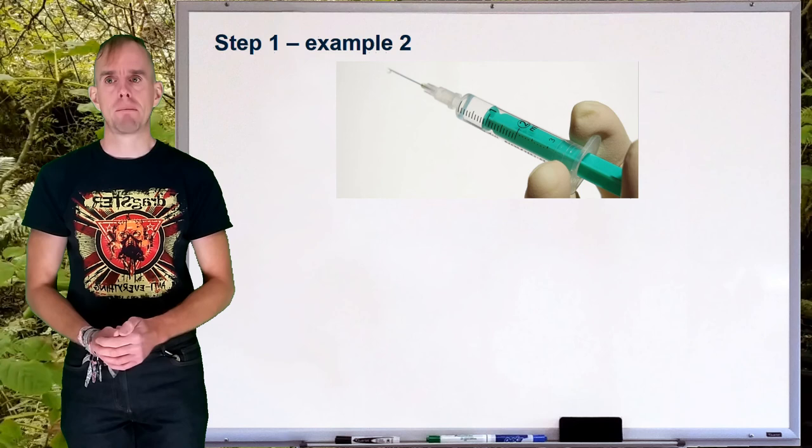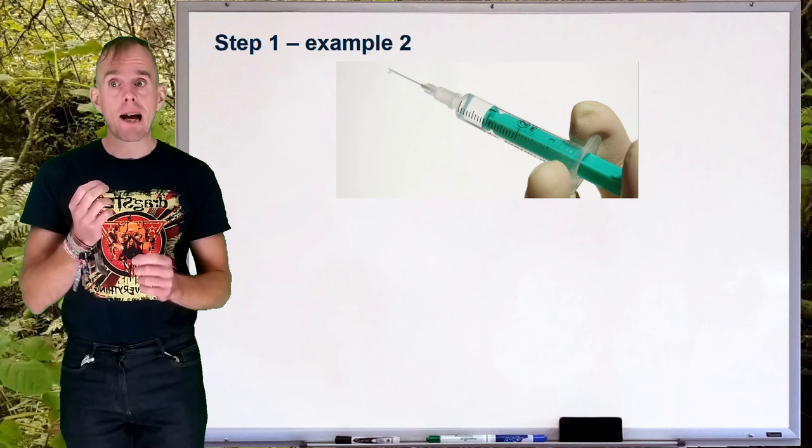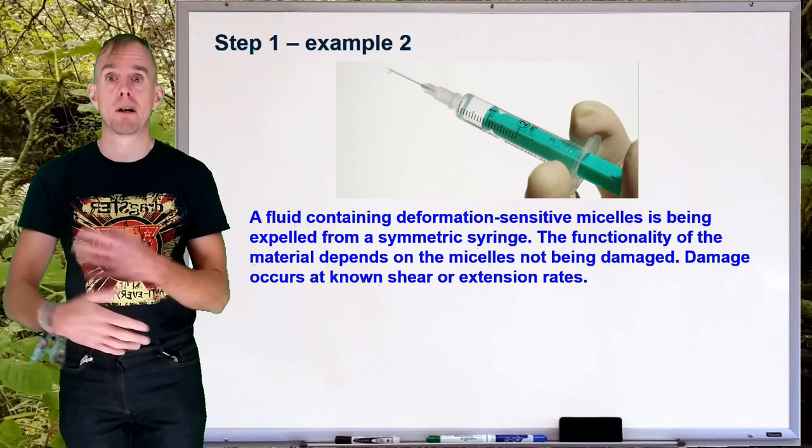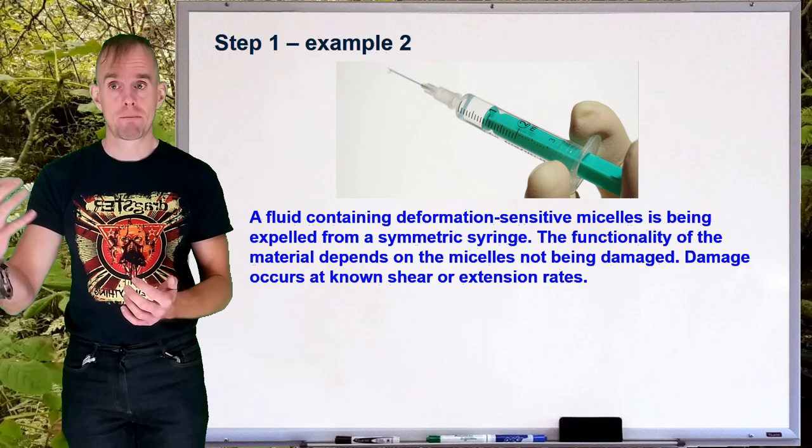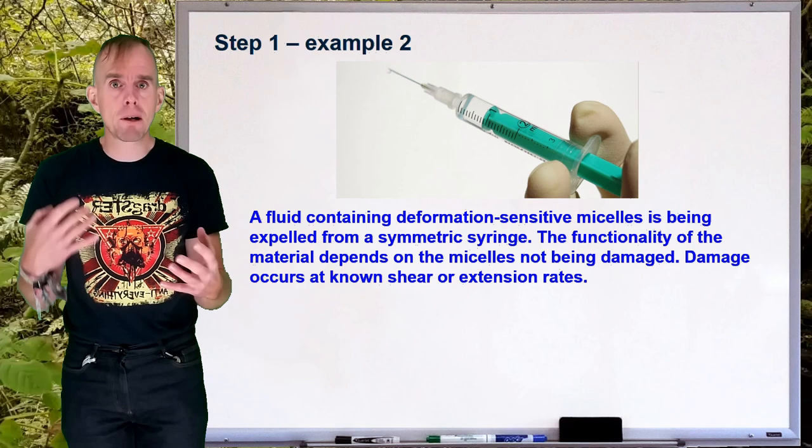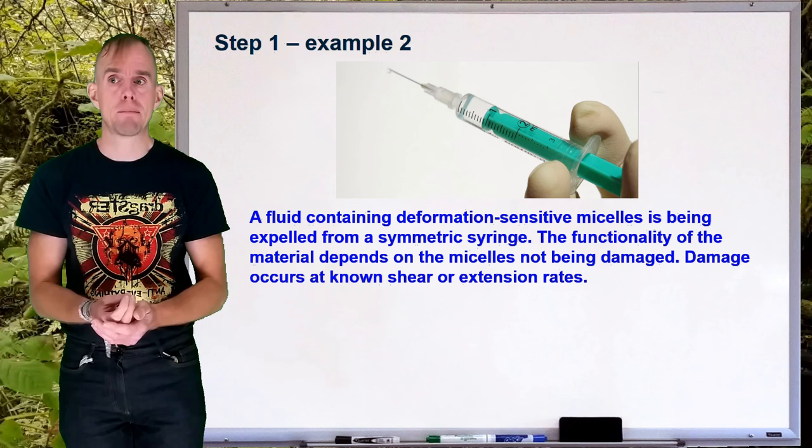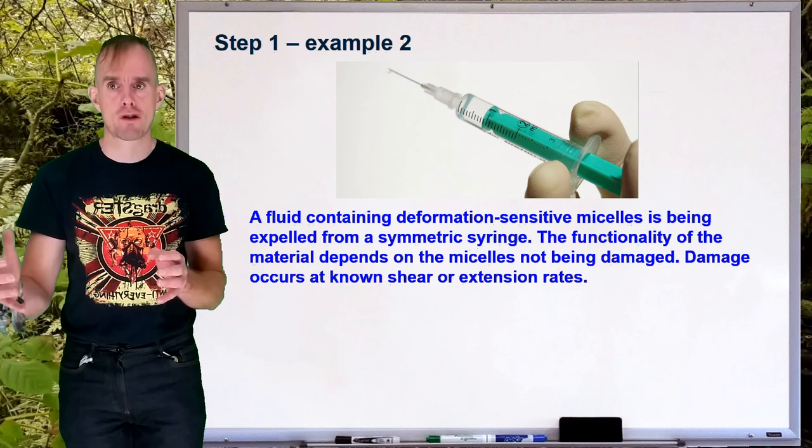OK, let's look at another example. Now, on the whiteboard in front of you, I've put a picture of a syringe, a medical syringe, where the outlet of that syringe is symmetrically in the centre of the syringe. Now, let's say within the syringe, we've got a fluid containing something called micelles. These are part of a microstructure. And these micelles are being expelled from this syringe. Now, the material in which these micelles are suspended is a functional material. And let's suppose that the functionality of this material depends on these micelles, this structure, not being damaged. And let's say we also know that damage occurs at known shear or extension rate. So there's a critical shear rate or a critical extension rate, which will break up the micellular structure. And we don't want to do that.